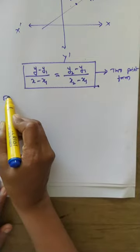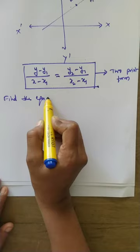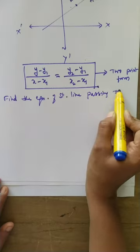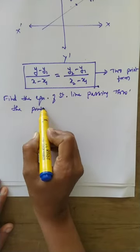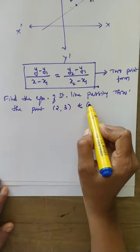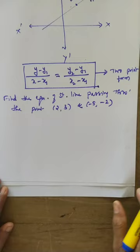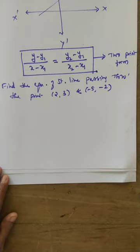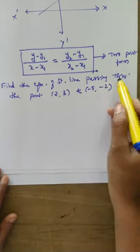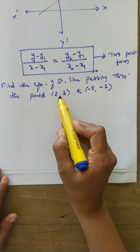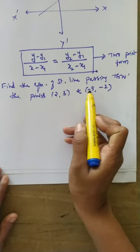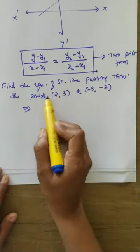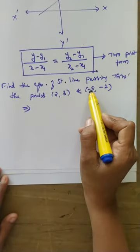I will explain the equation of straight line passing through the points (2, 3) and (-5, -2). Find the equation of straight line passing through the points (2, 3) and (-5, -2). The line passes through these two points.